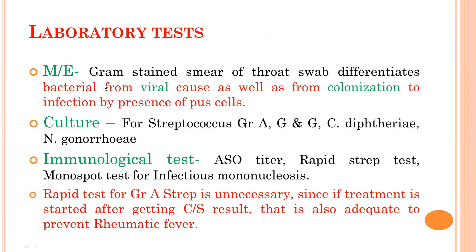For laboratory tests in pharyngitis: Gram-stained smear of the throat swab is helpful. It differentiates bacterial from viral cause and distinguishes colonisation from infection by the presence of pus cells. If a throat swab does not contain any pus cells, the presence of bacteria alone does not mean bacterial infection — it means colonisation. Culture for Streptococcus groups A, C, G; Corynebacterium diphtheriae; and Neisseria gonorrhoeae is done. Immunological tests like ASO titer, rapid strep test, and monospot test are available. A rapid test for group A Streptococcus is not essential since starting antibiotic treatment after culture sensitivity results is adequate to prevent rheumatic fever.